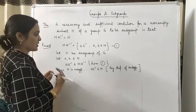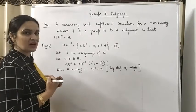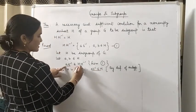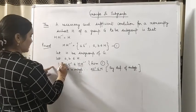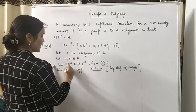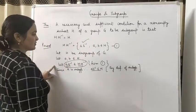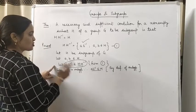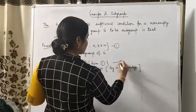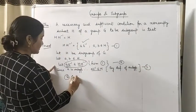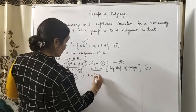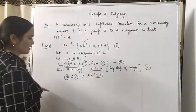हमने एक theorem की थी कि अगर A, B H में है और H subgroup है तो A·B⁻¹ कहाँ होगा? H में। So A·B⁻¹ belongs to H. So A·B⁻¹ किसके element था? H·H⁻¹ का, और वो H में चला गया। So जो भी element H·H⁻¹ का होगा वो H में चला जाएगा। This is step (2) and (3). From (2) and (3), H·H⁻¹ is contained in H. Let this be (4).